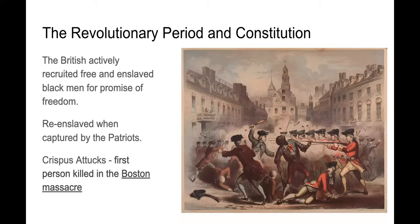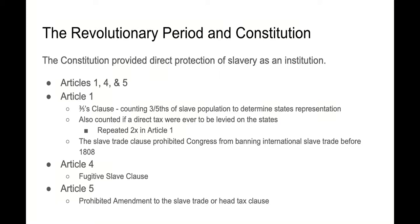The first person killed in the Boston Massacre was the slave Crispus Attucks. It's still kind of unclear what his role was in that event. During the revolutionary period and the post-revolutionary period, the founders actually incorporated protections of slavery in the actual Constitution. Articles 1, 4, and 5 specifically address slavery.